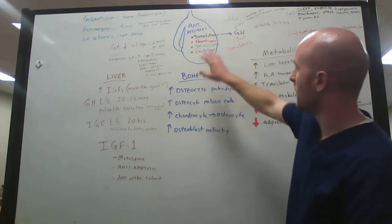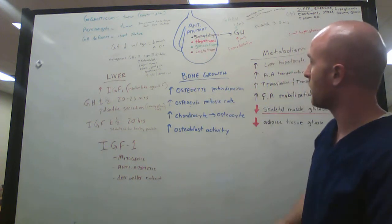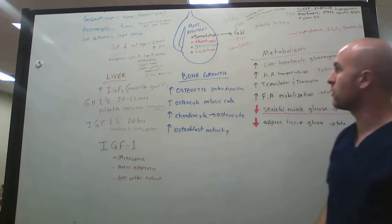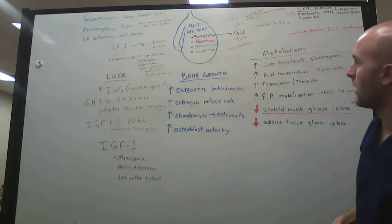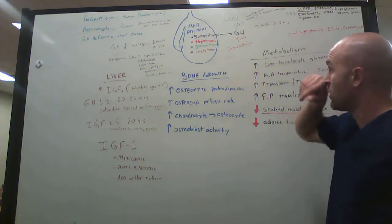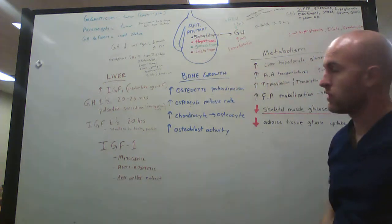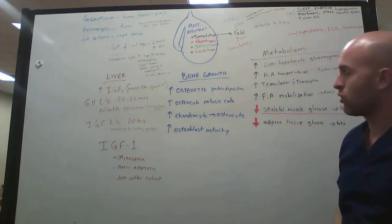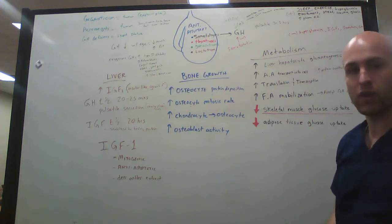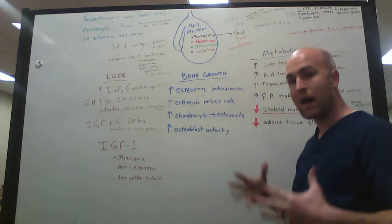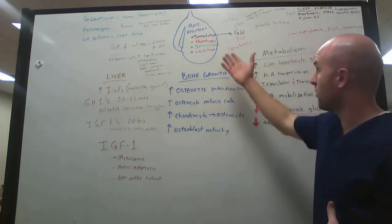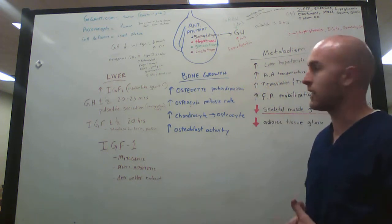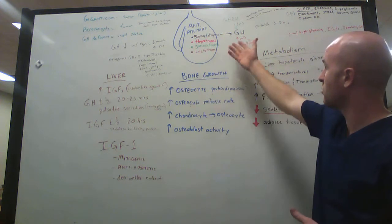These cells of the anterior pituitary include somatotropes, thyrotropes, gonadotropes, and lactotropes. Each of the different cells produces a different peptide or signal. The somatotropes release growth hormone. You can think of growth hormone causing your body to grow. Soma means body, so somatotropes, growth hormone.